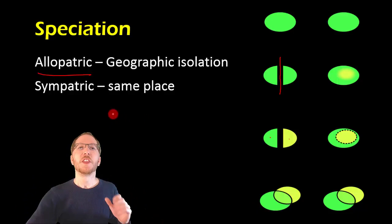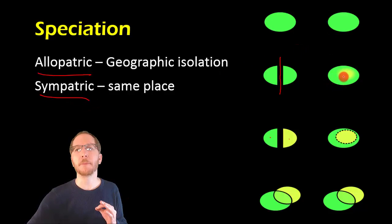The next way is sympatric. So this one's interesting because this is where you get a separation in populations, but they both still live in the same place at the same time. So this can occur if you had where a new mating behavior evolved.